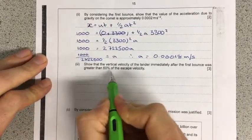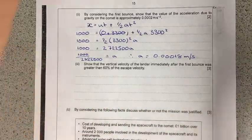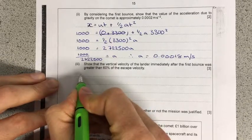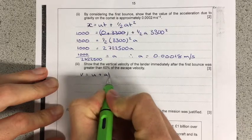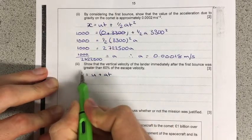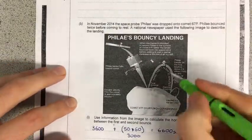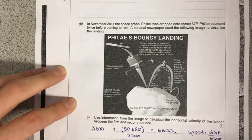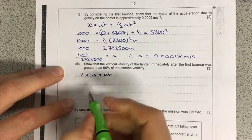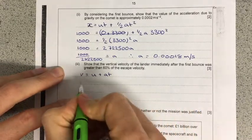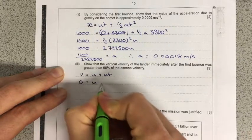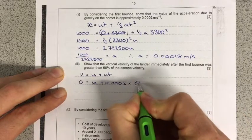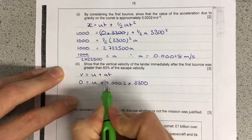So the next part of the question wants us to show that the vertical velocity of the lander immediately after its first bounce is going to be 60% of its escape velocity. So to do this, I'm going to use another one of the kinematics equations. This time I'm going to use V equals U plus AT. And I'm going to define V as the top of that bounce, a bit like I cheated earlier and only worried about half of this. So I'm going to say that V is up here and that makes U down here. Time is going to be the same 3,300 seconds that we used in the last question.